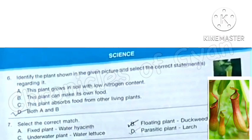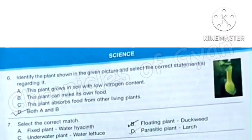Option B: This plant can make its own food. Yes, this statement is also correct. Option D: This plant absorbs food from other living plants. Like other plants, they can make their own food by carrying out the process of photosynthesis. So this statement is incorrect. So we will point out option D as the correct answer, that is option A and option B both are correct.